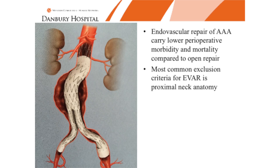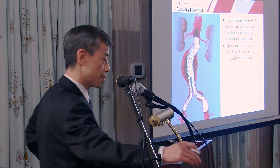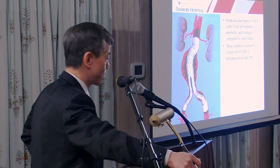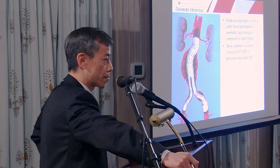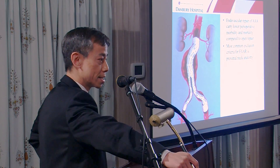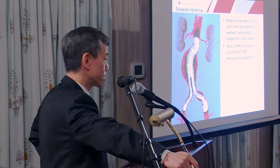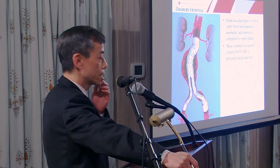So just a brief overview about aneurysm repair. Why do we fix them? The main reason is to prevent the risk of rupture. The way I think about it is 50% of people who rupture never make it to the hospital, and of the 50% that do, 60% die despite intervention. So obviously prevention is key.